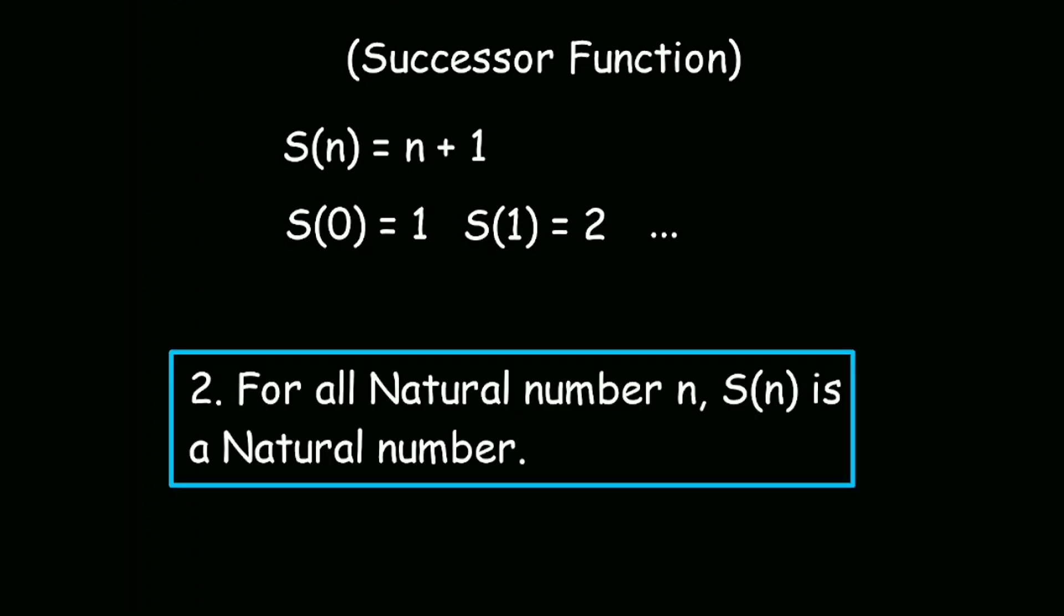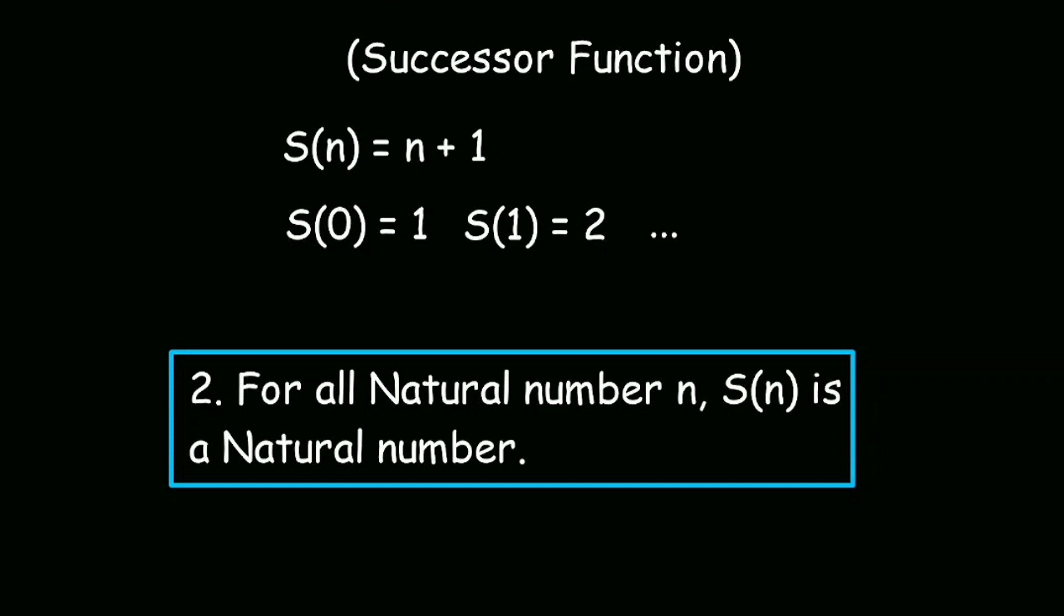The second axiom is, for every natural number n, successor of n is also a natural number. Our third axiom is, for all natural numbers m and n, if successor of m equals successor of n, then m equals n. That means if the successor functions of two natural numbers are equal, then those two natural numbers are also equal.